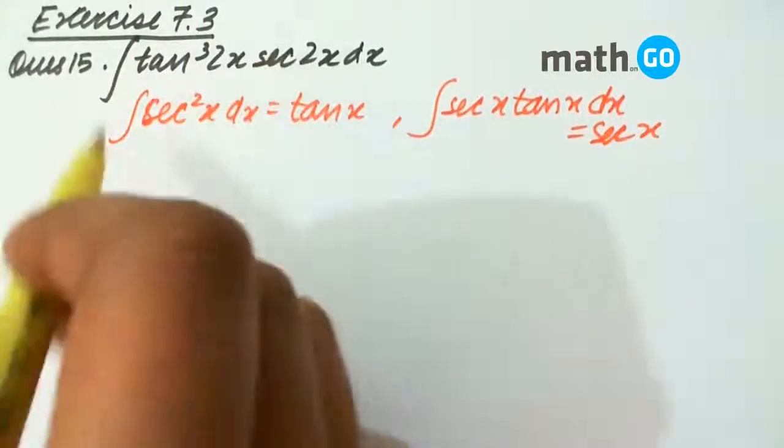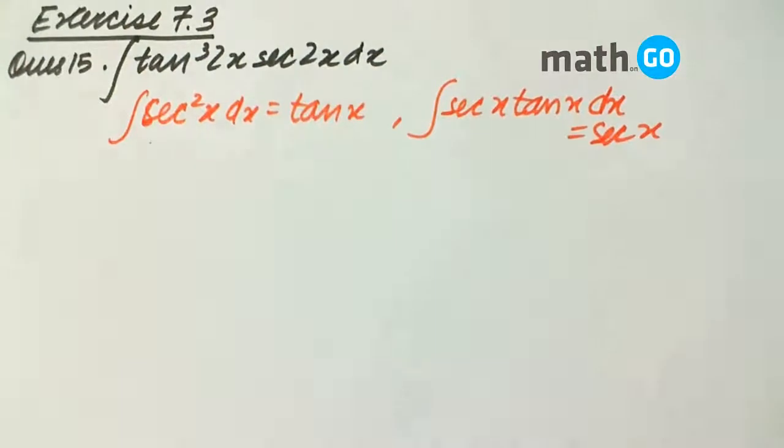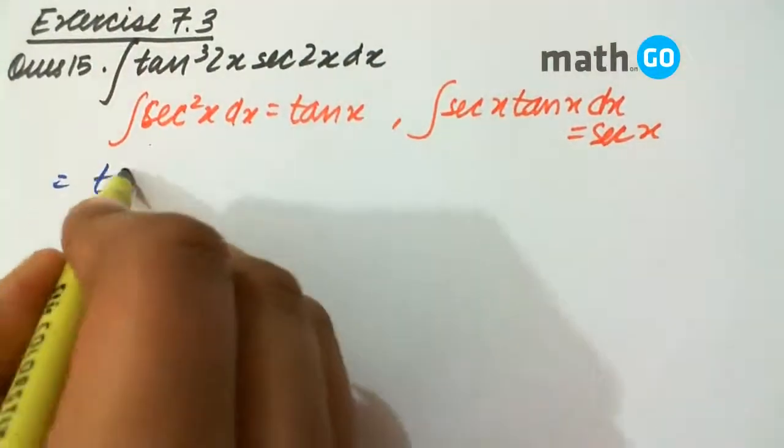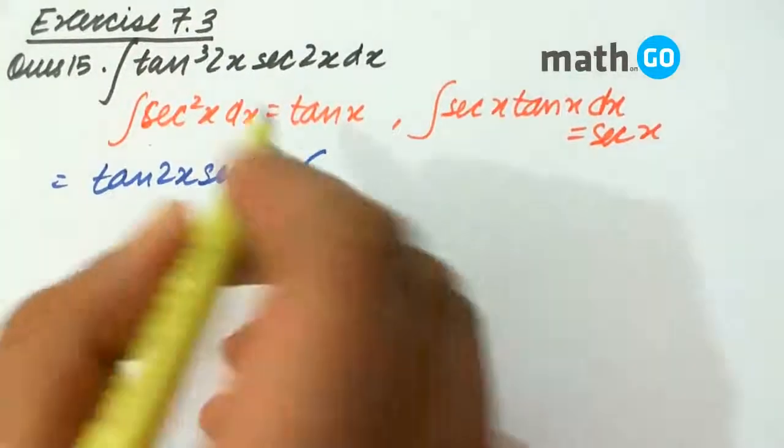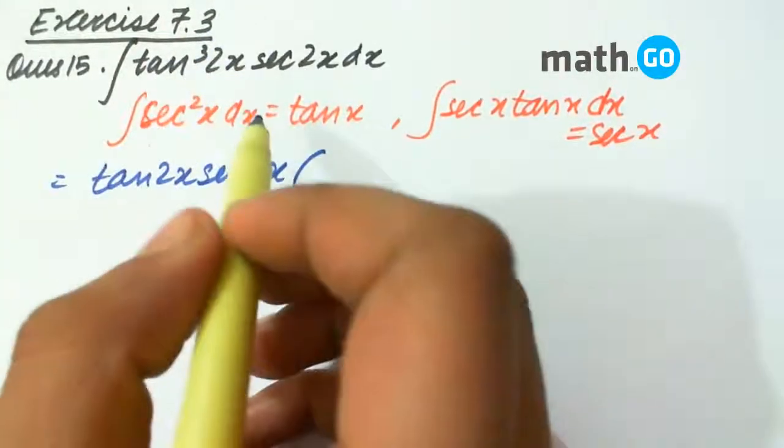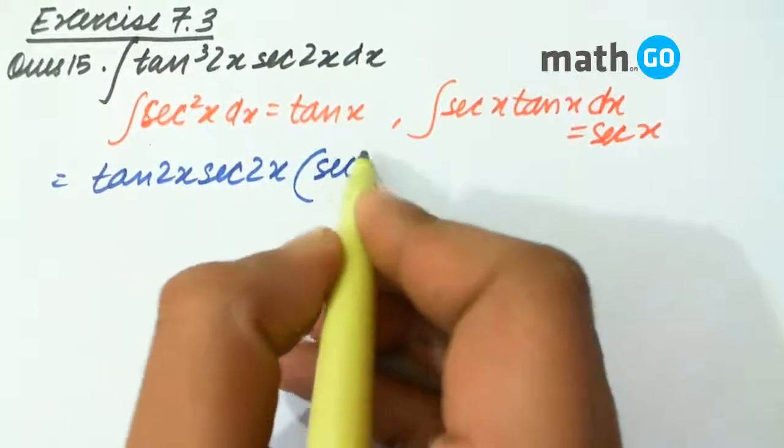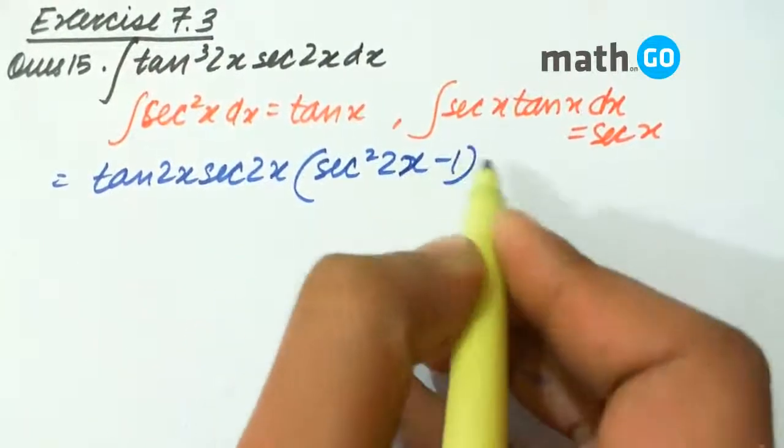So, how do we convert this? We will keep tan 2x and sec 2x aside. We are left with tan square 2x, which can be written as sec square 2x minus 1.